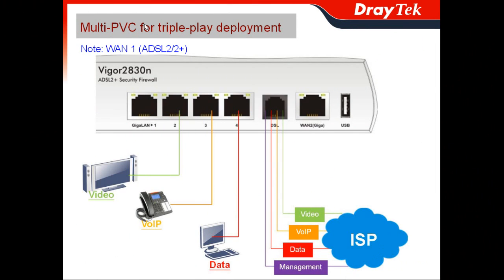In this section, we would like to introduce the Multi-PVC function for the triple-play deployment. As an experienced reseller, you may have connections with the local ISP to help them enroll a project. It might be the situation where the ISP talks to you and says they recently have a triple-play project to serve local subscribers and asks whether you can provide the CPE to satisfy the demands from the triple-play. If you have a JTAG router, you can definitely say yes.